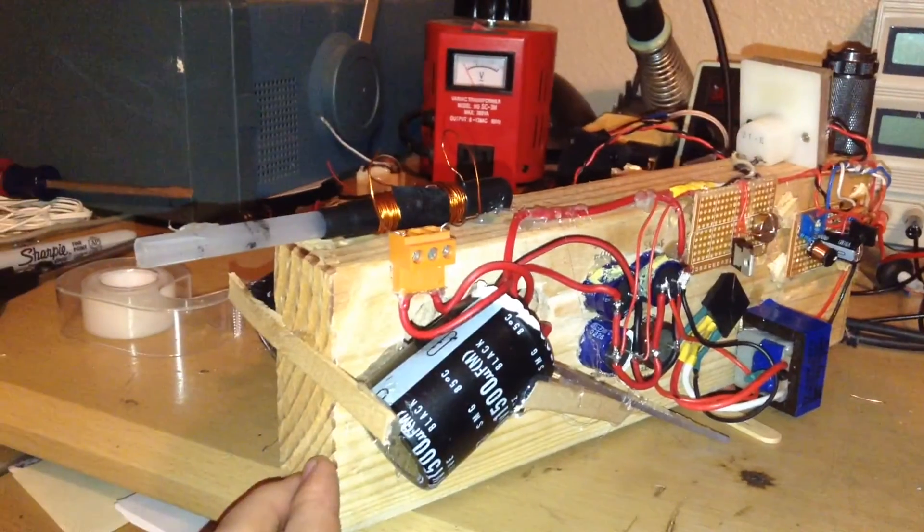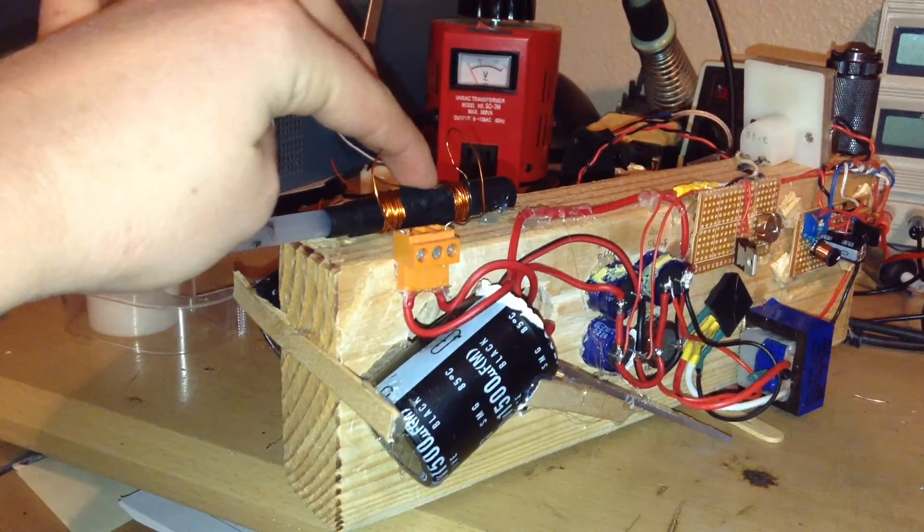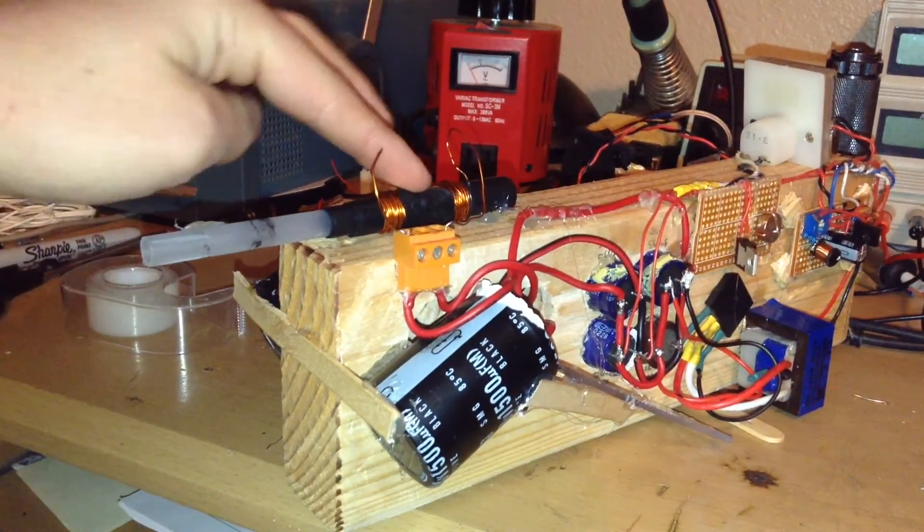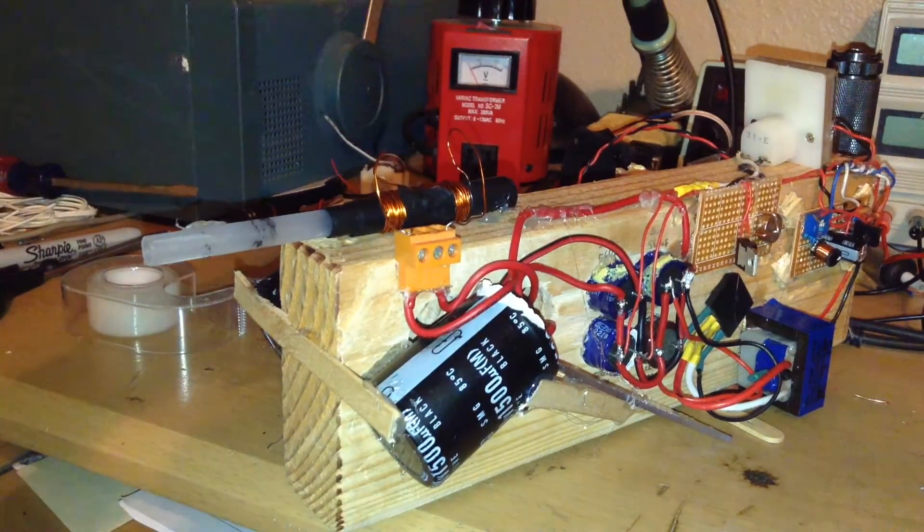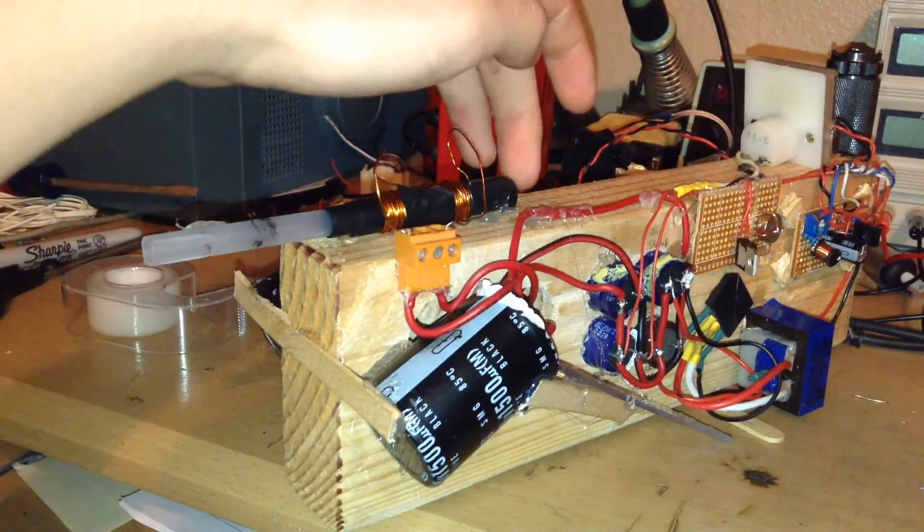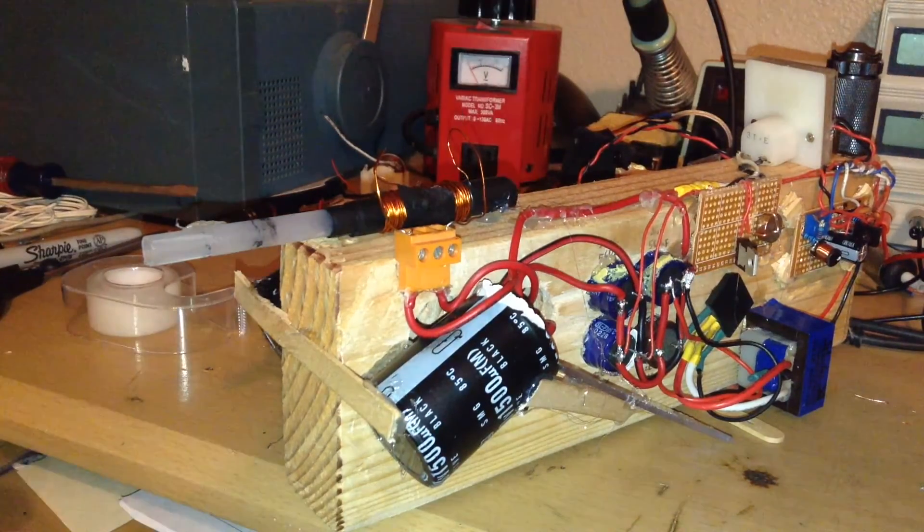Now for the solenoid. The solenoid is one of the main parts of a coil gun. It is the part that creates the magnetic field that accelerates your magnetic projectile out of the tube.